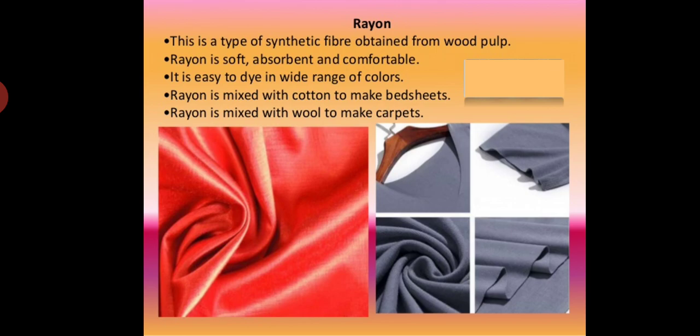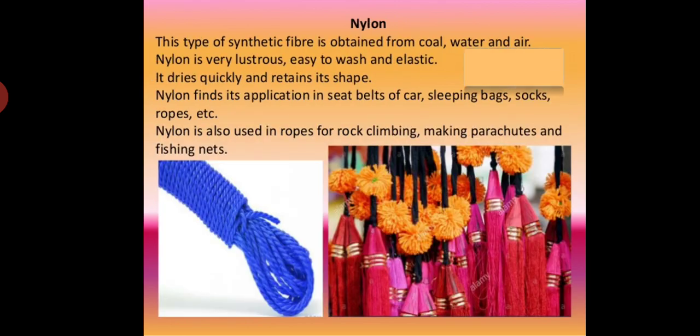For making carpets, rayon is mixed or merged with wool. Nylon is a synthetic fiber obtained from cold water and air. Nylon is very lustrous — meaning very shiny. It is easy to wash, very elastic, dries up very quickly, and maintains its shape.